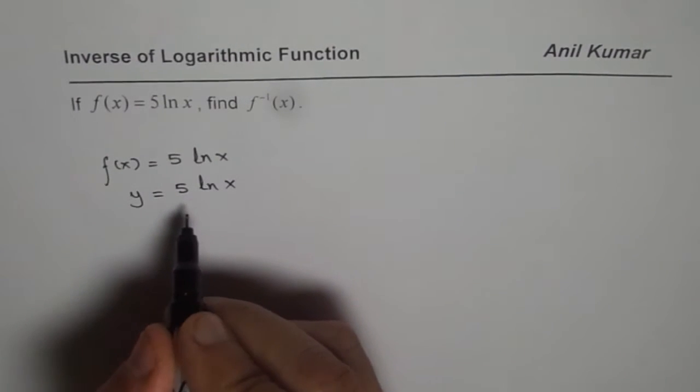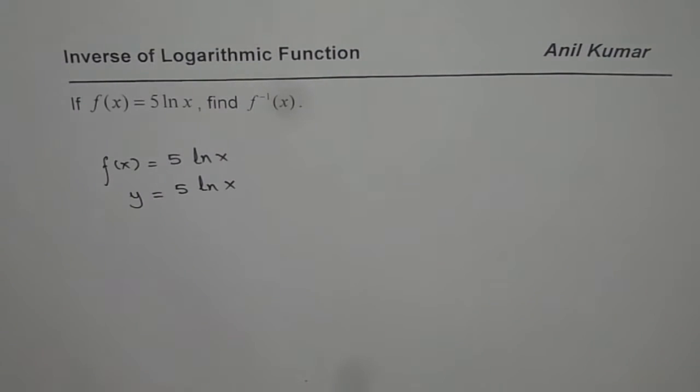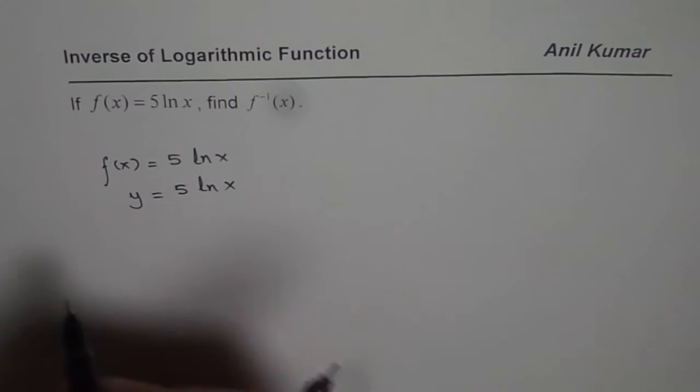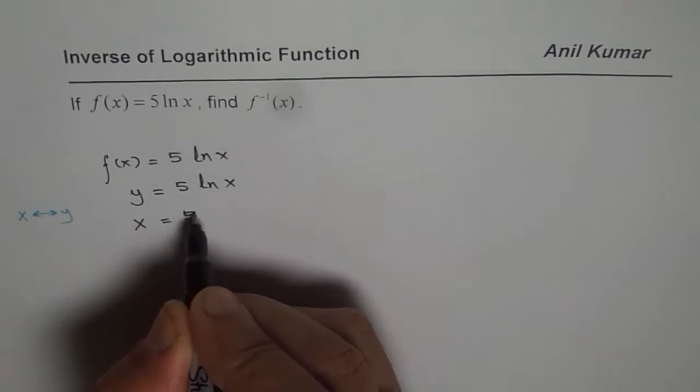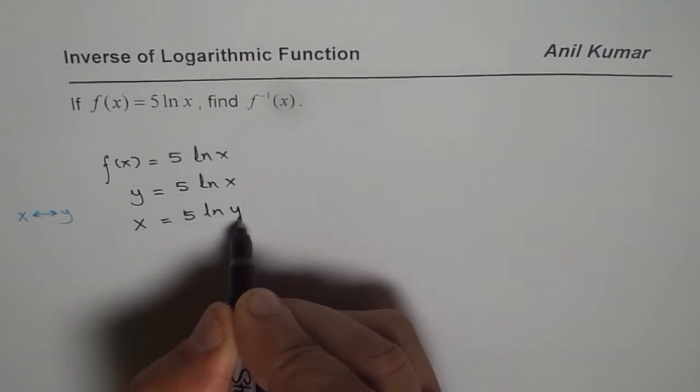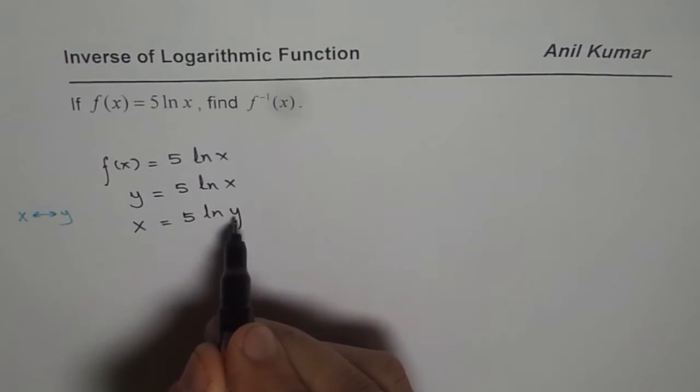Now to find inverse we have to switch x and y. So once you swap x and y, you get x equals to 5 ln y. Now we have to solve for y.